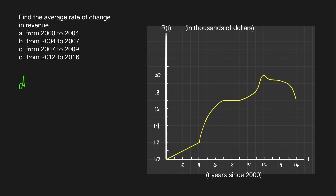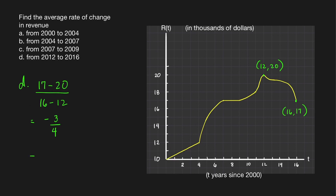Let us now find the average rate of change from 2012 to 2016. For 2012, we have the point (12, 20), and for 2016, we have the point (16, 17). The average rate of change equals 17 minus 20 over 16 minus 12 — note that order is important when finding the slope of a line. This gives negative 3 over 4. The numerator is in thousands, so this is negative $3,000 over 4 years, which equals negative $750 per year.